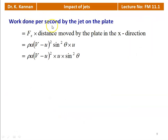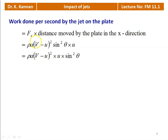The work done per second by the jet on the moving inclined plate equals Fx times the distance moved by the plate in the x-direction: Work = ρA(V − U)² sin²θ · U. So, Work = ρA(V − U)² · U · sin²θ. This equation is required for calculating the work done per second, or the power of the plate.